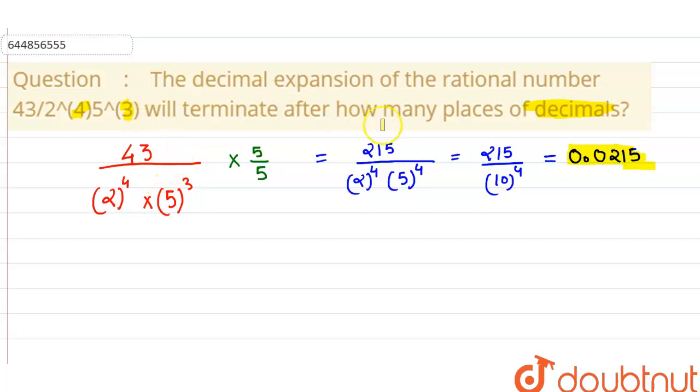So how many places of decimal will there be? There are going to be 4, because we clearly see that after 4 digits, because it is divided by 10 to the power 4.